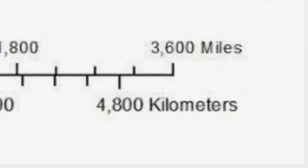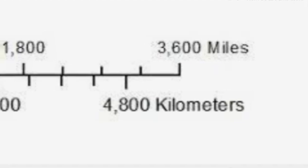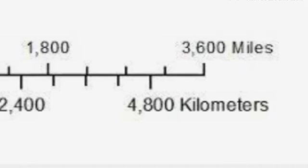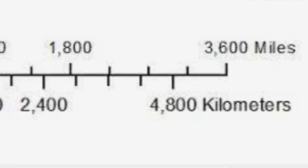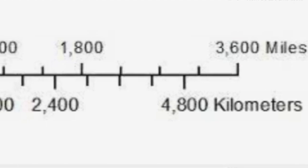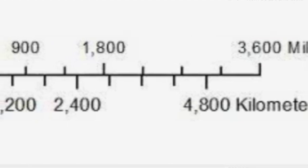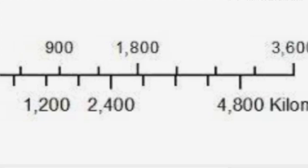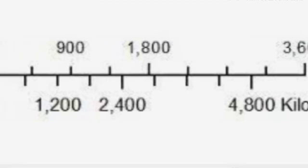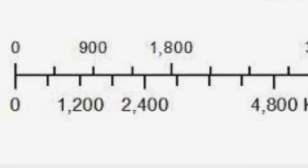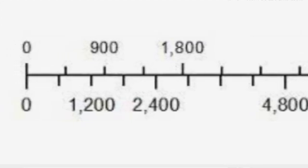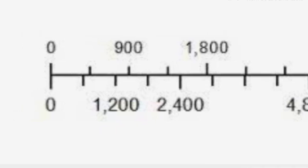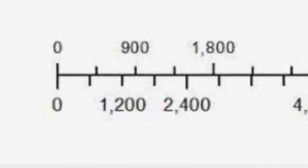The scale bar tells how distance is measured on a map and compares it to actual distances on Earth. A large scale map focuses on a small area — its scale might be 1 inch to 10 miles, meaning 1 inch on the map equals 10 miles on Earth. A small scale map focuses on a larger area and has a larger scale.